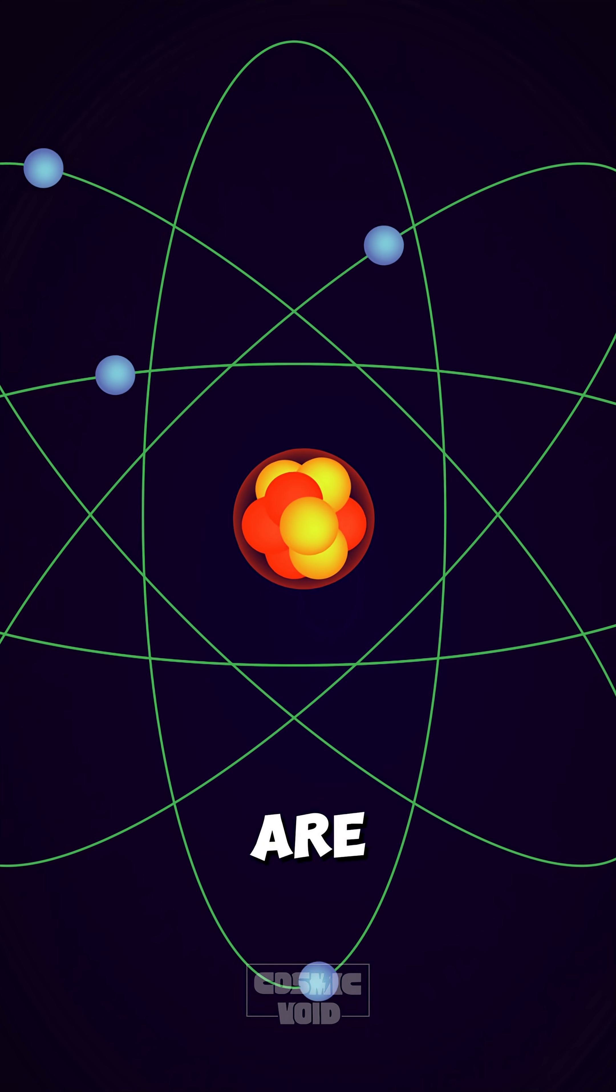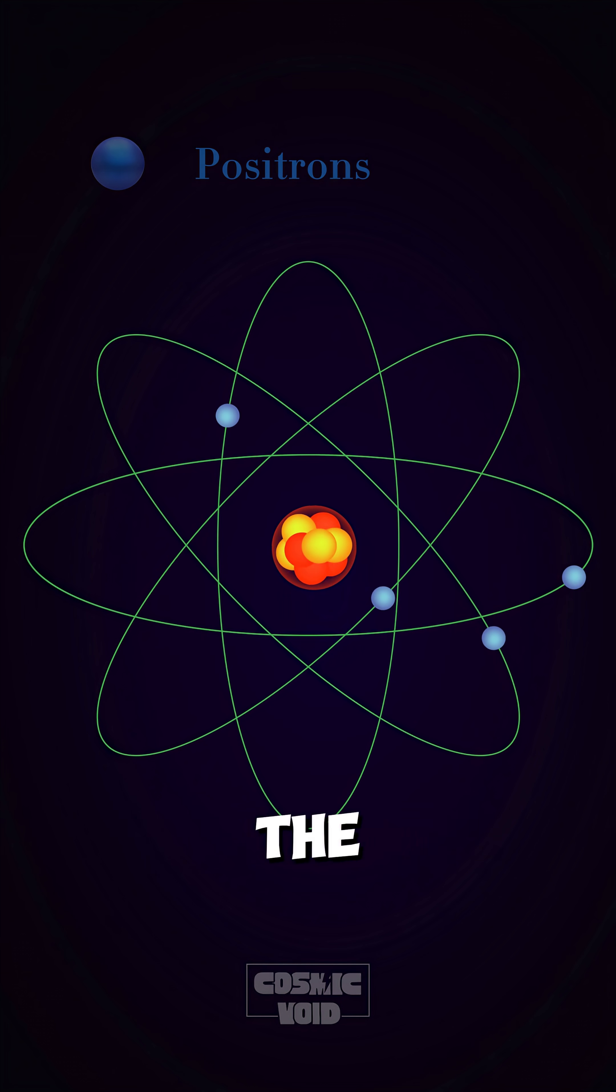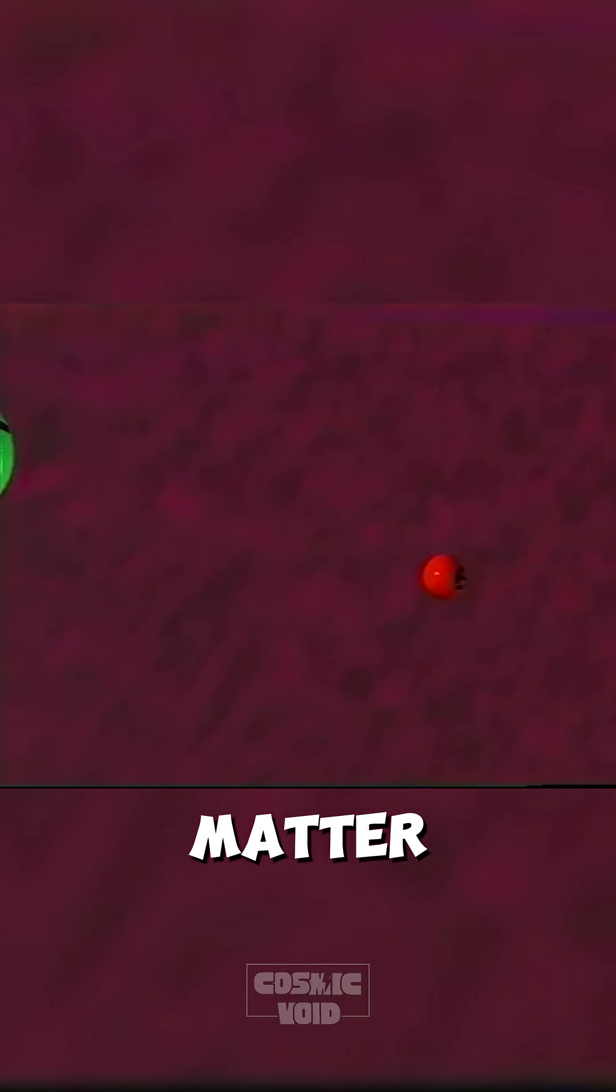Surrounding this nucleus are clouds of positrons, the antimatter counterparts of electrons, but with positive charge. When antimatter meets matter, their particles collide and annihilate, converting their entire mass into enormous amounts of energy instantly.